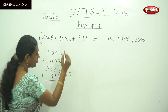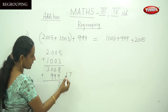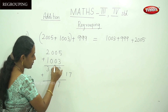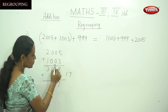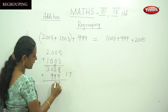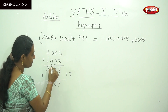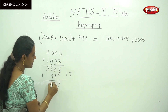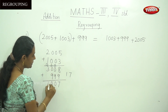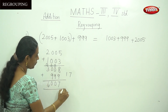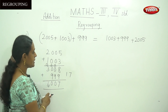Continuing the regrouping addition: 9 plus 1 carry is 10, write 0 and carry 1. Again 9 plus 1 is 10, write 0 and carry 1. Then 3 plus 1 is 4. So the answer is 4007.